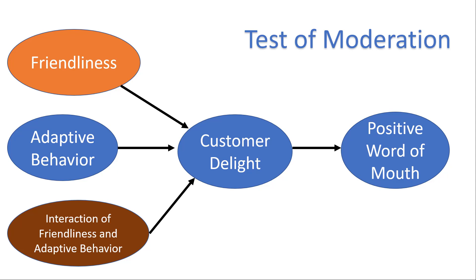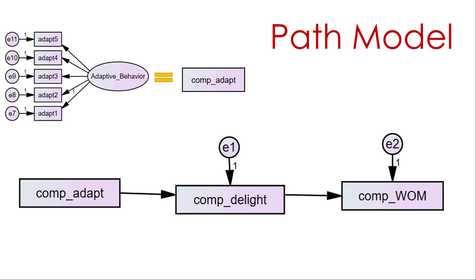For the majority of moderation testing, what you'll see is researchers forming composite variables. They'll take an unobservable variable like adaptive behavior — maybe measured by five questions: adapt one, two, three, four, and five — and convert it to a composite variable, either by averaging or summing all five items, crushing it down into one. They use these composite variables so that when they form the interaction term, it's just the composite of adapt times the composite of friendliness.